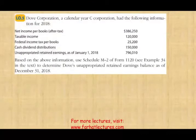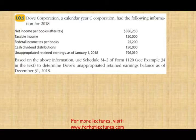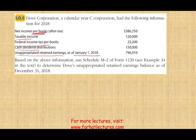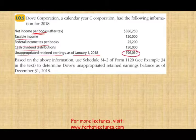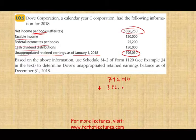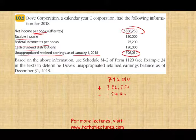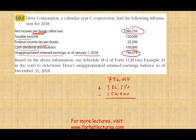Let's take a look at an example to see how it works. We have D Company, a calendar-year C corporation, with the following: income per books, taxable income, federal income tax per books, cash dividends, and unappropriated retained earnings as of January 1st. Now, taxable income has nothing to do with Schedule M2. Federal income tax per books has to do with Schedule M1. They give you these figures to see if you really know how to prepare this.